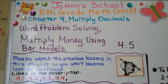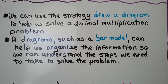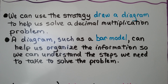Lesson 4.5: Word Problem Solving — Multiply Money Using Bar Models. Remember, there are links in the description to help you if you need them. We can use the strategy 'Draw a Diagram' to help us solve a decimal multiplication problem. A diagram, such as a bar model, can help us organize the information so we can understand the steps we need to take to solve the problem. We're going to solve 7 word problems in this video about multiplying money using bar models and multiplying decimals.